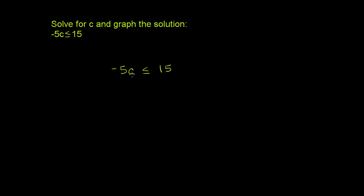So if we want to solve for c, we just want to isolate this c right over here, maybe on the left-hand side. It's right now being multiplied by negative 5. So the best way to just have a c on the left-hand side is we can multiply both sides of this inequality by the inverse of negative 5, or by negative 1 fifth.